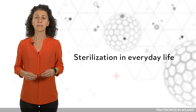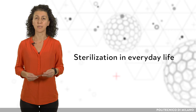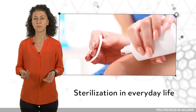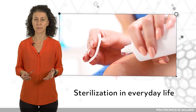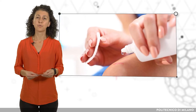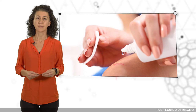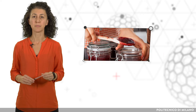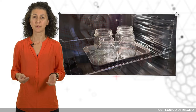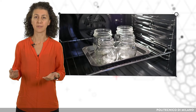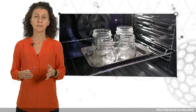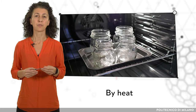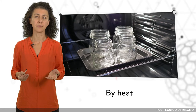During everyday life, people commonly use sterilization methods. If you ever get a scratch, most likely you use hydrogen peroxide to clean it. This is also used to prevent infections — sterilization obtained with a chemical. Also at home, when you make some jam, you have to sterilize the jar in order to preserve it for a longer time. In this case, sterilization is obtained with heat: the jar is kept at 130 degrees Celsius for 20 minutes.